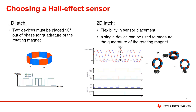1D latches have a single hall element at the center of the device, which is sensitive to the magnetic field perpendicular to the face of the package. One single-axis latch can be used to determine the speed of the motor, while a second single-axis latch can be added with a 90-degree phase offset, which will produce greater resolution and enable the detection of rotation direction. 2D latches have two hall elements which are orthogonal — rotated 90 degrees from each other — and can measure components in two different directions. This eliminates the need for a second latch and allows a single device to measure speed and direction.